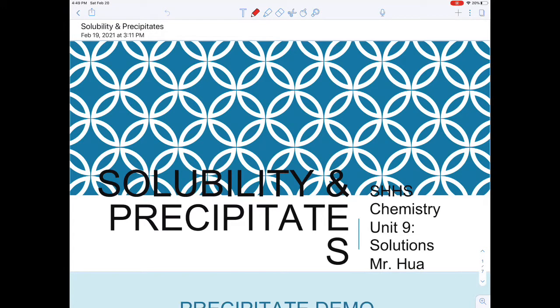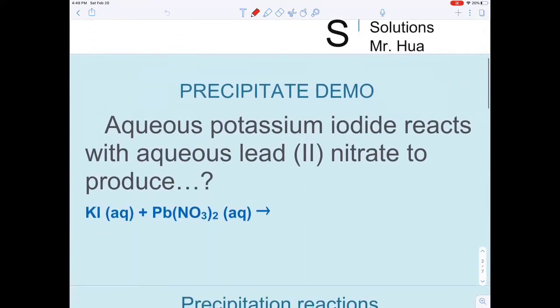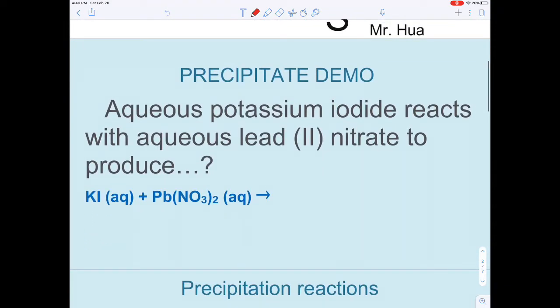Hi everyone, today we are going to learn about solubility and precipitates. We'll start with a demonstration. Aqueous potassium iodide reacts with lead nitrate to produce... let's see what happens. Before we do, 'aq' means aqueous, which just means it dissolves in water. We're going to see these two chemicals react.